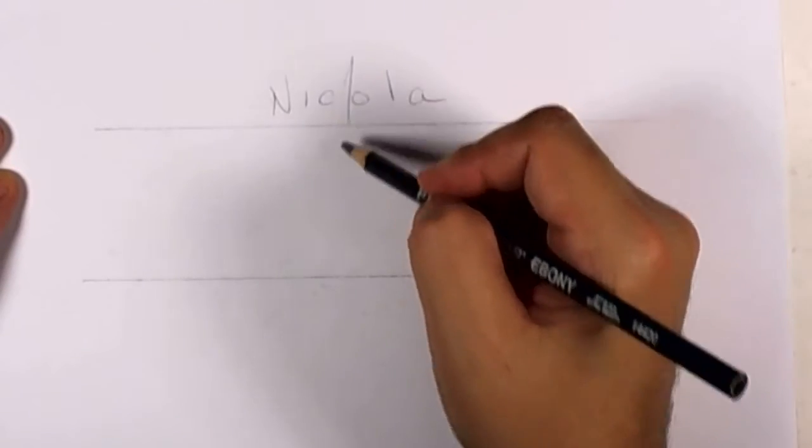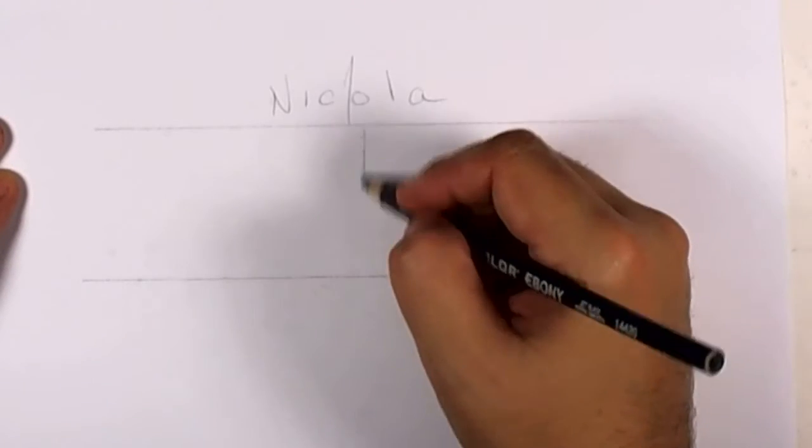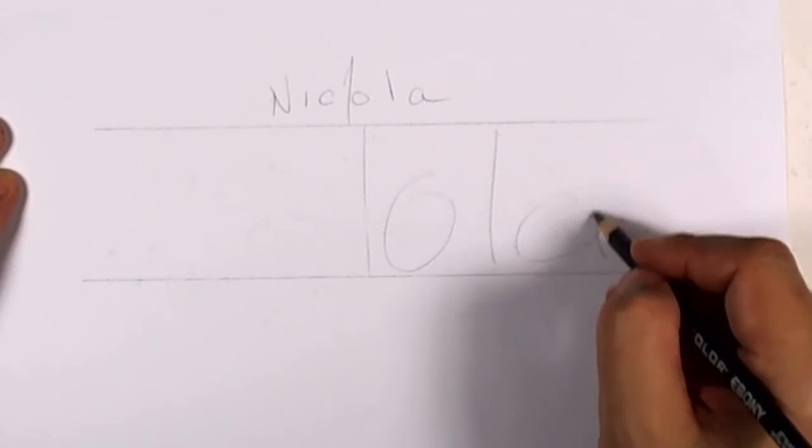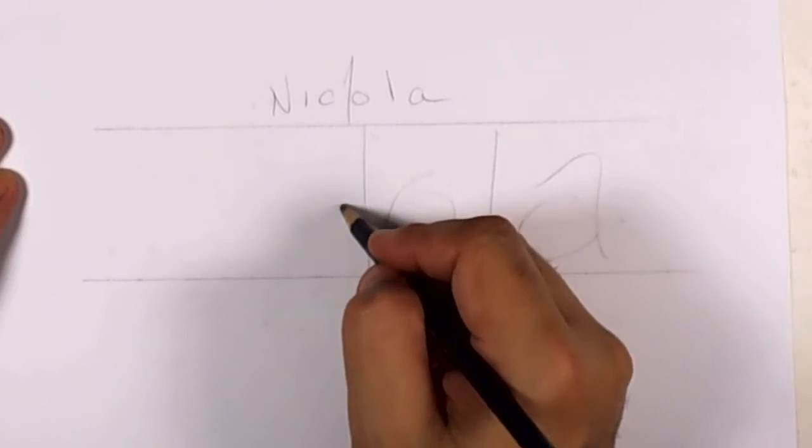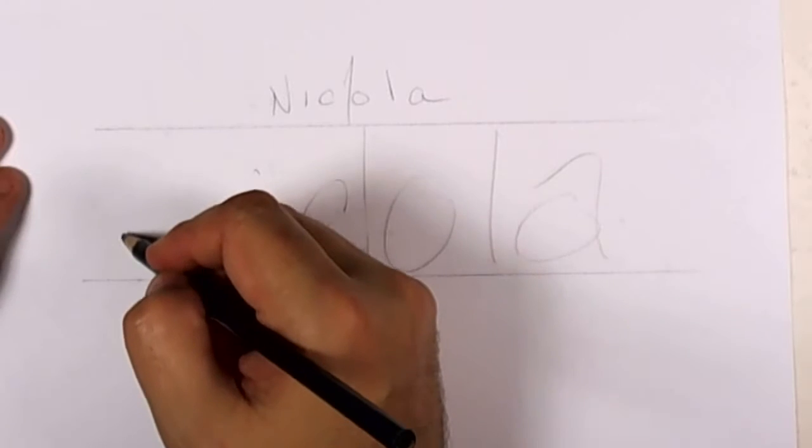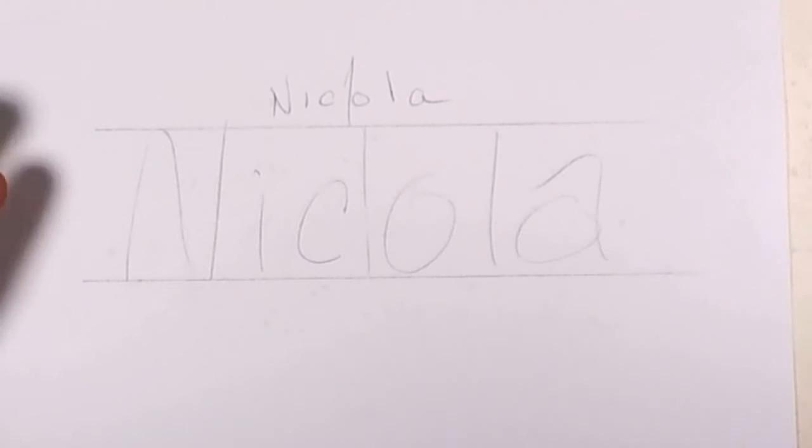And that is six letters. Right there is the center of that. So we're going to have O-L-A, and we'll back up and we'll have N-I-C right there.